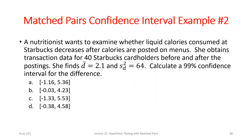Let's do one more example — we'll do the confidence interval and a more detailed hypothesis test. Say I want to see what happened when Starbucks started posting calories on their menu. I have 40 Starbucks cardholders and look at their before and after calorie consumption. I find the mean difference across the 40 cardholders is 2.1, the variance is 64, and I want a 99% confidence interval. Our confidence interval will be built around that sample statistic of 2.1.